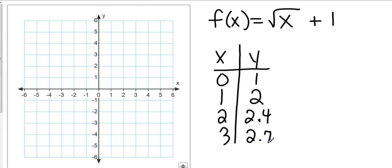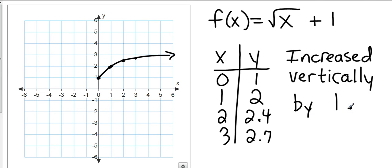Okay. So, now let's graph this. We've got 0, 1. We've got 1, 2. We've got 2, 2.4. That's right in there. And 3, 2.7. Okay. So, what this one has done is it has increased 1. On the last one, we know it was multiplied by 2. And this one, it's increased vertically by 1. Increased vertically by 1. And that's because the 1 is on the outside of the square root bracket.